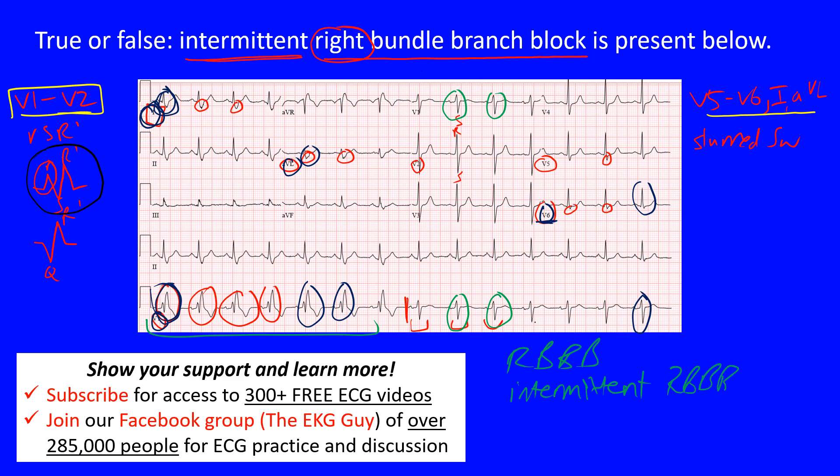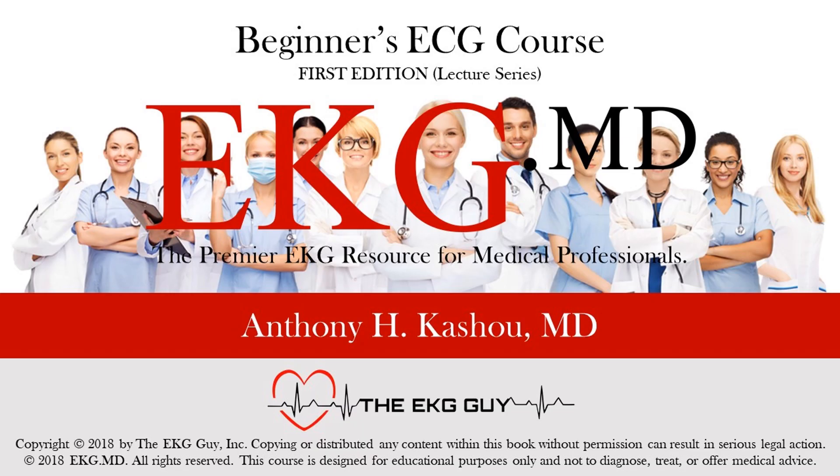You don't always catch intermittent right bundle branch block, but when you do it's quite fascinating - and on this ECG we certainly did. So this true or false question asking if intermittent right bundle branch block is present - the answer is certainly true. The key is to know the basics and make sure you factor in the entire ECG.